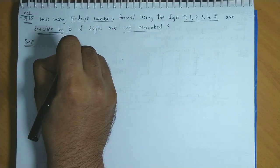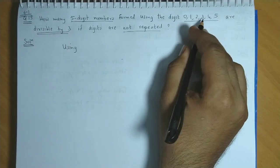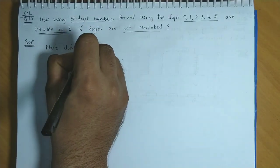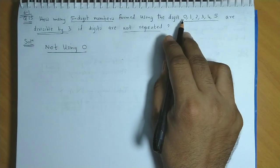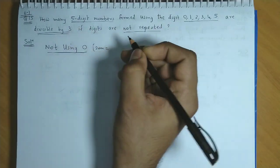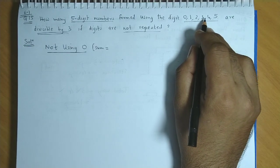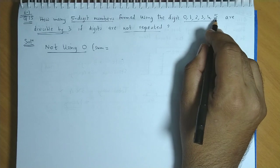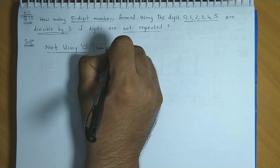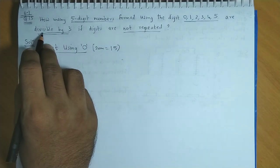In the first case, suppose we do not use 0. If we don't use 0, let's check the sum of digits. 1 plus 2 is 3, plus 3 is 6, plus 4 is 10, and plus 5 is 15. So if we don't use 0, the sum of digits will be 15, which would definitely be divisible by 3.